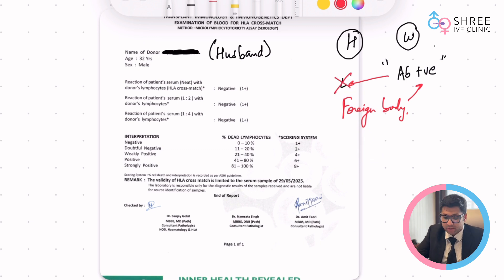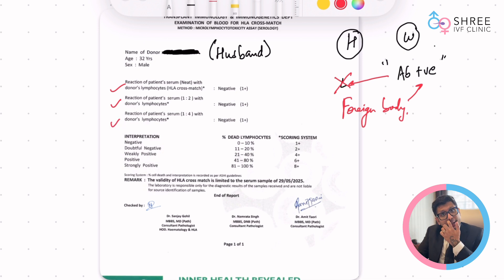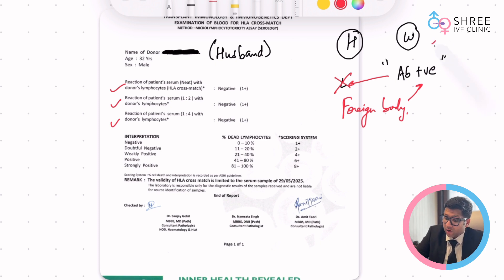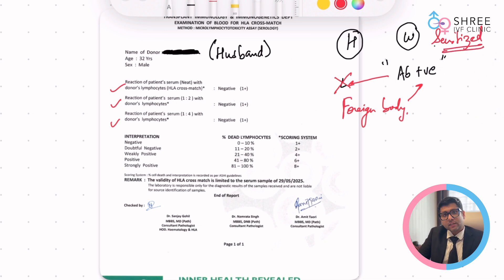That means the reaction of patient serum with donor lymphocytes in diluted concentration is going to keep on testing positive — meaning the wife or the mother is already sensitized towards the lymphocytes.